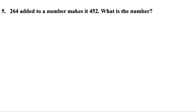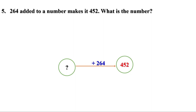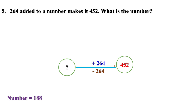Fifth problem: 264 added to a number makes it 452. What is the number? We don't know the number, but when 264 is added to it, it is 452. We need the number before adding 264 — just do the reverse: subtract 264. For mental calculation, subtract 200 from 452 to get 252; then subtract 52 to get 200. We have subtracted 252, leaving 12 more to subtract. Subtract 12 from 200 to get 188. So the number is 188. When you add 264 to 188, it is 452.